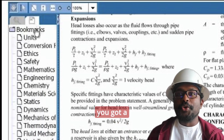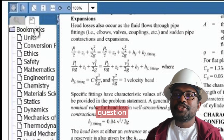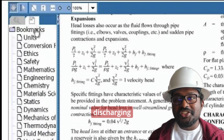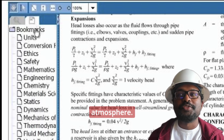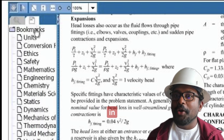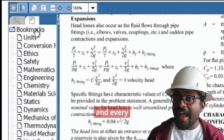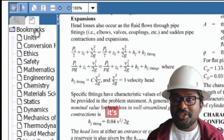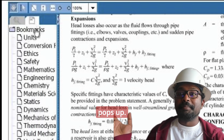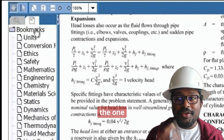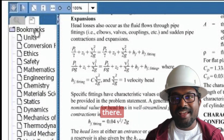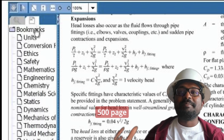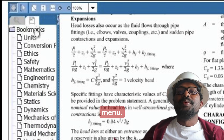Let's say you got a fluids question and you need to look up orifice discharging into the atmosphere. You type in 'orifice' and every section where it's mentioned pops up. You click the one you need and boom, you're right there. No scrolling through a 500-page manual.